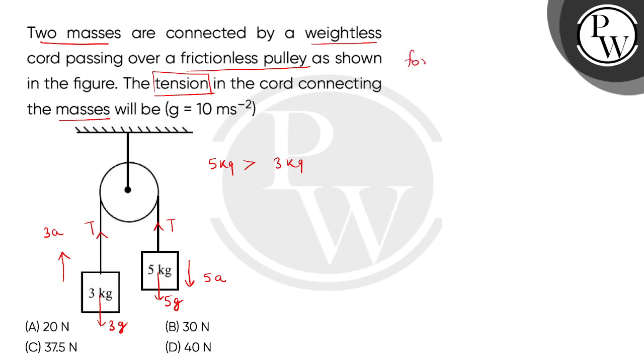Now we will make force balance equation. First we will make for 3 kg. So 3A equals to T minus 3G, equation number 1. Now we will make force balance equation for 5 kg which will be 5A equals to 5G minus T. This is equation number 2.